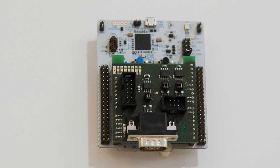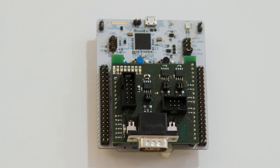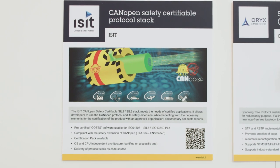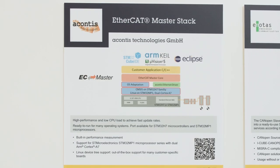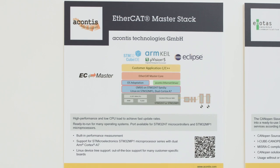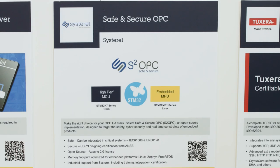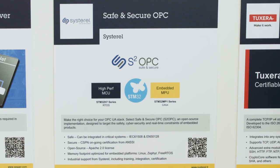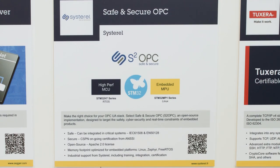Then, if you need a safety extension to CANopen, CIS 304 offers a certified solution. Accomptis provides an EtherCAT master stack with tools, and CIS 304 develops a safe and secure open-source OPC-UA stack. These latter two partners work in both real-time OS and Linux environments on high-end devices like STM32-H7 and STM32-MP1.